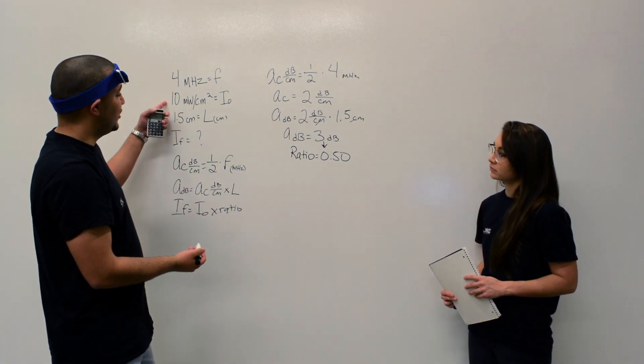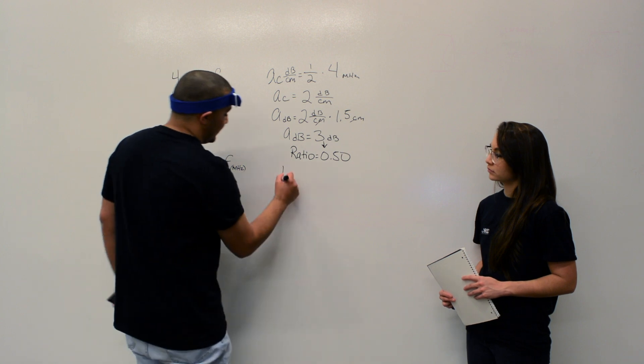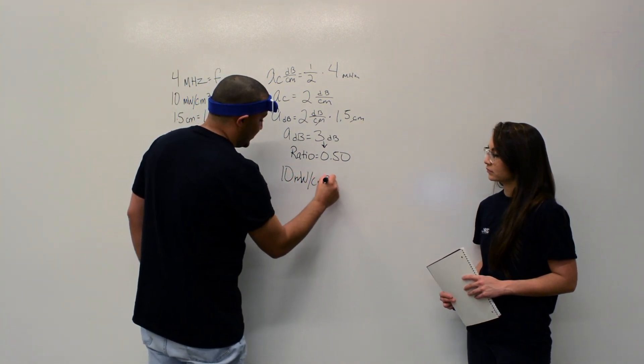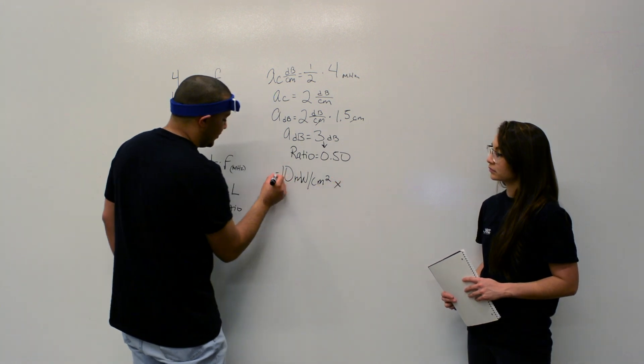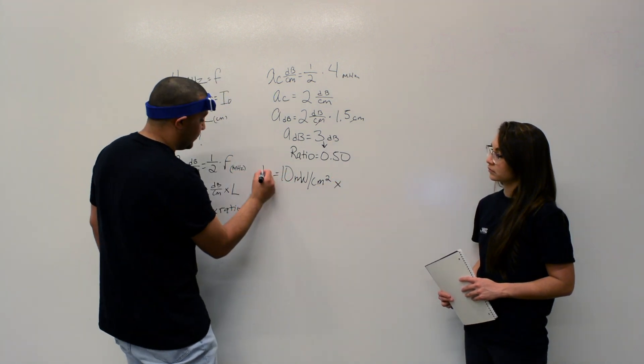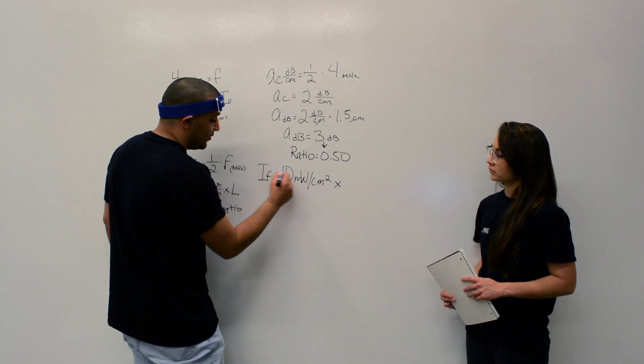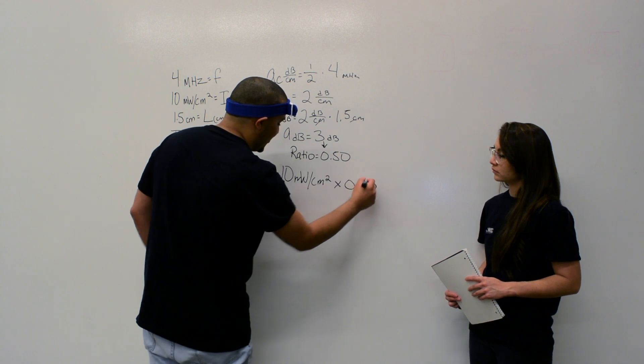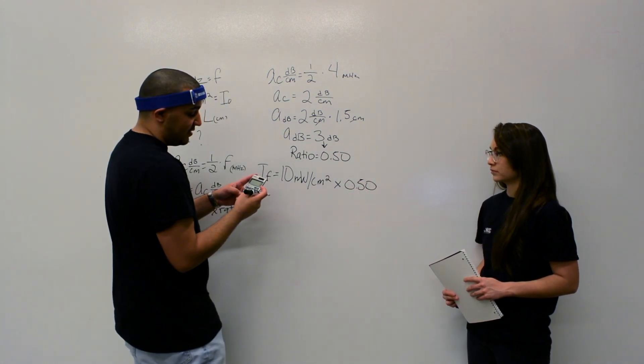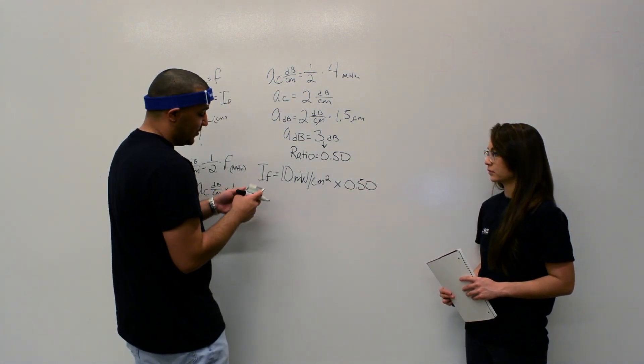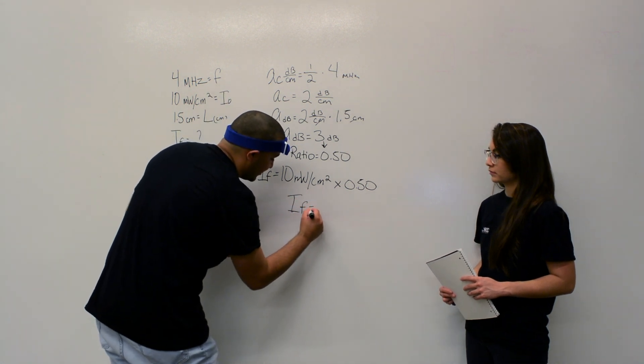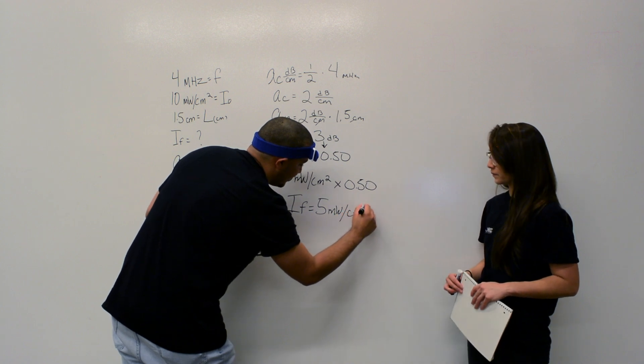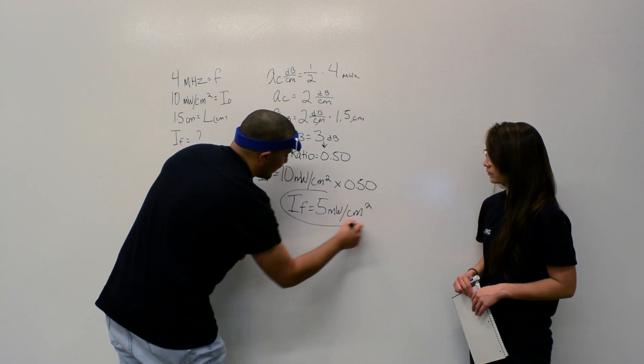Our initial intensity, the 10 milliwatts per centimeter squared. 10 milliwatts per centimeter squared times—I like to put the beginning part so you know what you're solving for. Final intensity equals 10 milliwatts per centimeter squared times 0.50 equals 5. So your final intensity is 5 milliwatts per centimeter squared. This is your answer.